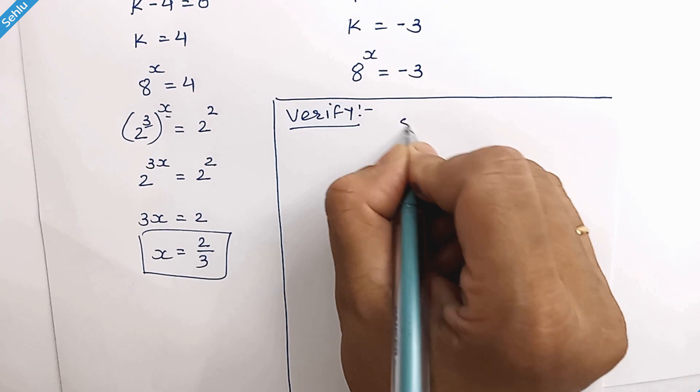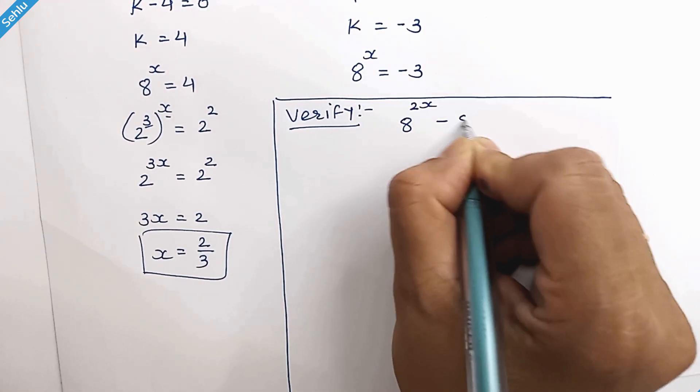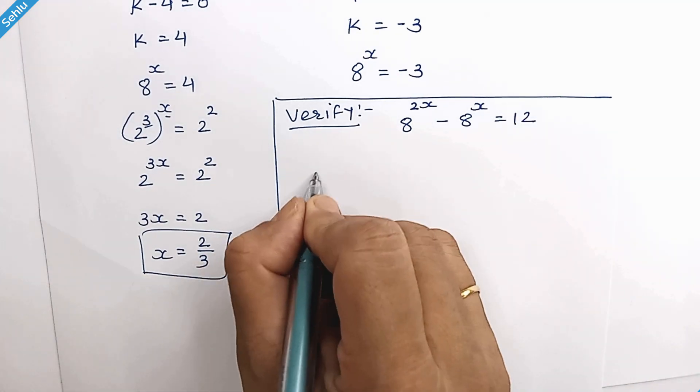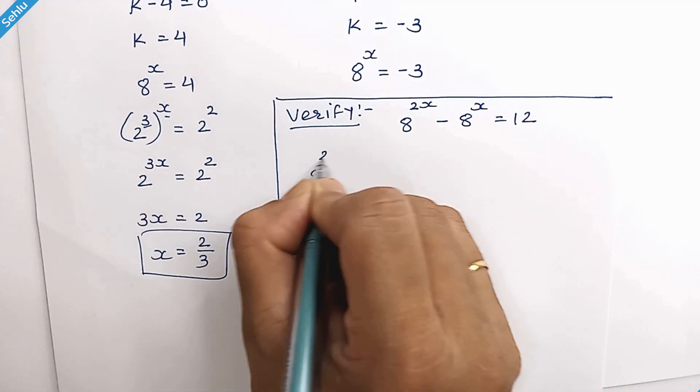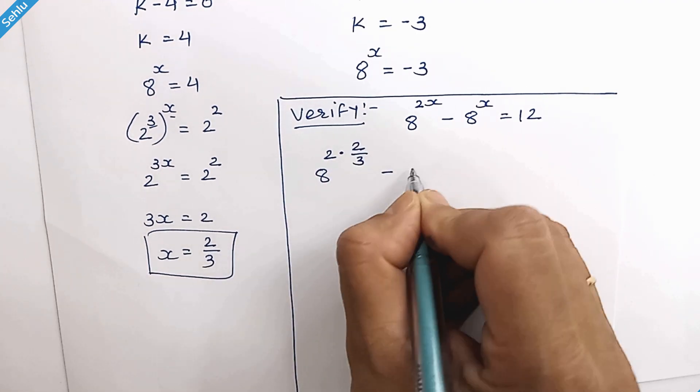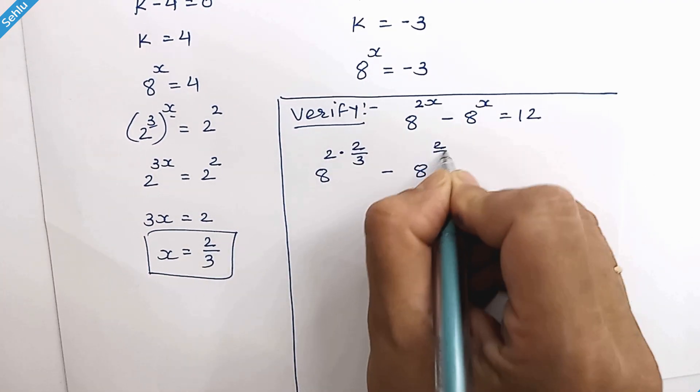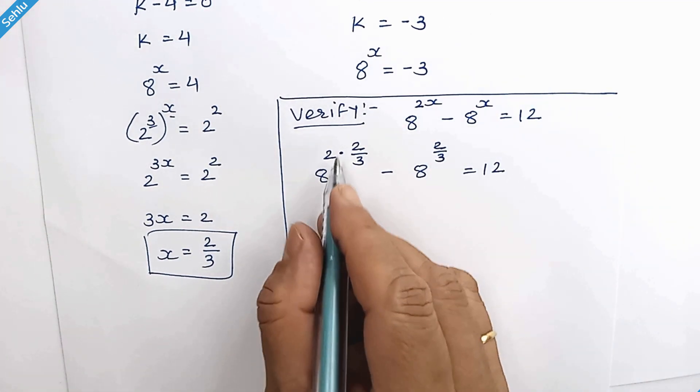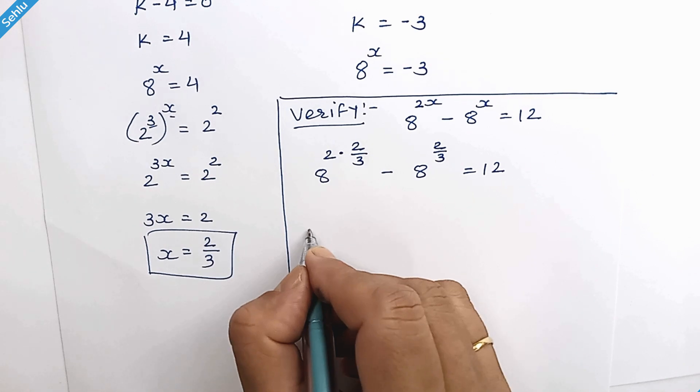Question is 8 to the power 2x minus 8 to the power x is equal to 12, so we have 8 to the power 2 times 2 over 3 minus 8 to the power 2 over 3 is equal to 12.